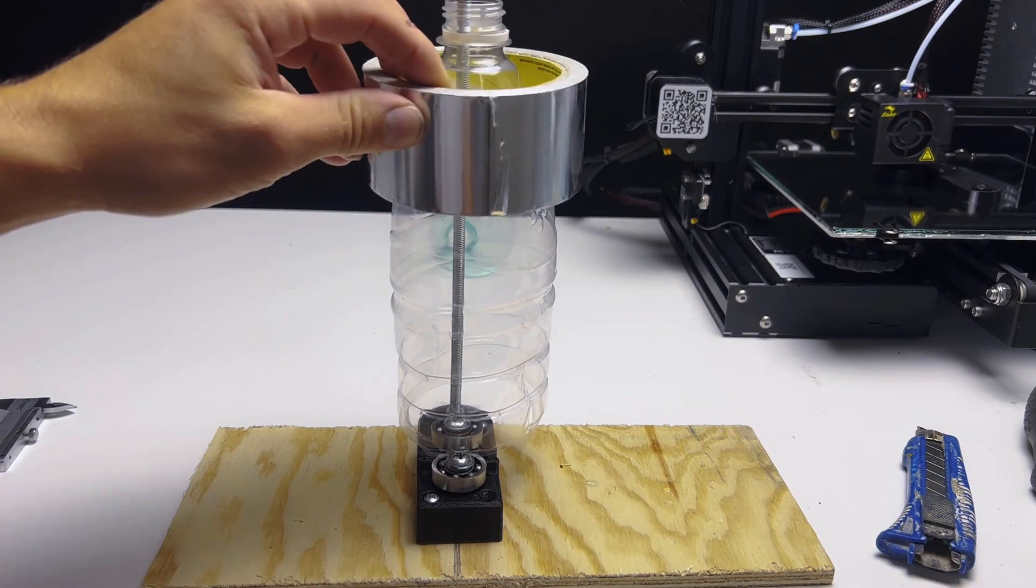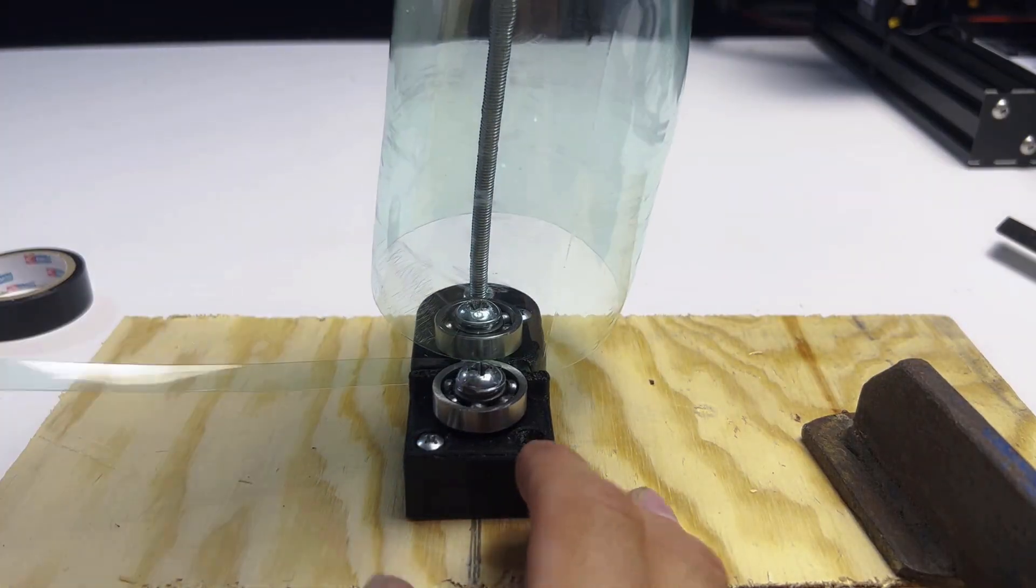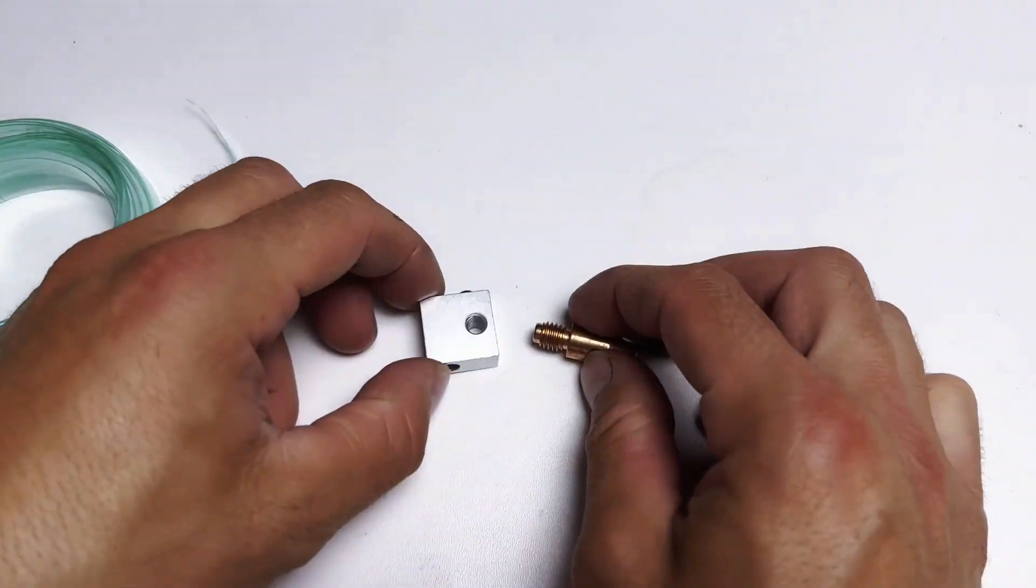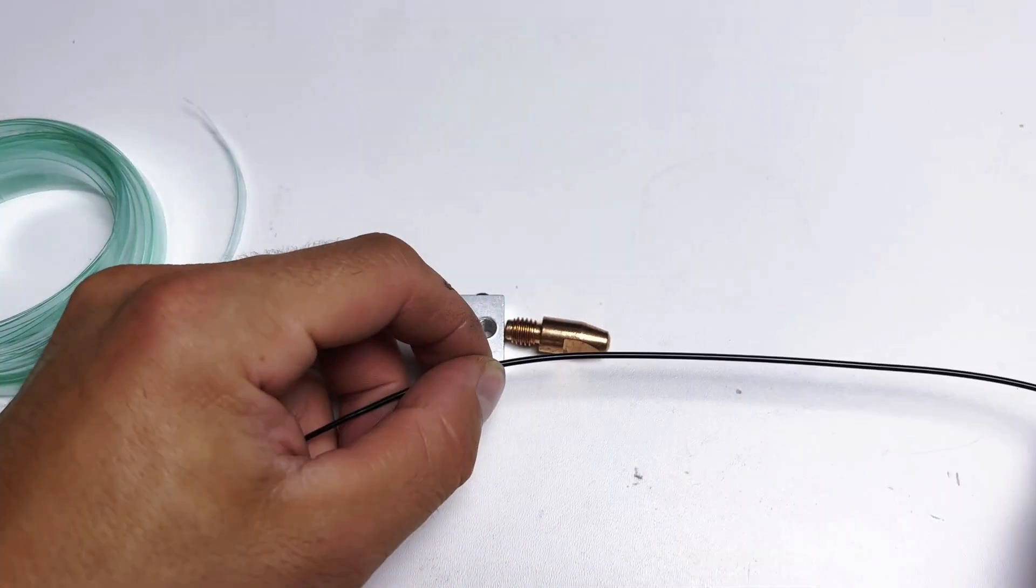The goal is simple: take a pet bottle, cut it into a plastic strip, and use a nozzle to shape the strip into filament, ready to be used in a 3D printer again.